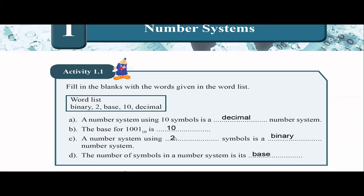A number system using a blank number of symbols in a blank number system — there are many answers possible, but because we have 'two' and 'decimal' in the word list, the answer is: a number system using two symbols is a binary number system, just as a number system using 10 symbols is a decimal number system. In higher grades you will also learn octal and hexadecimal. The most appropriate answers here are 'two' and 'binary'. Finally, the number of symbols in a number system is its base.